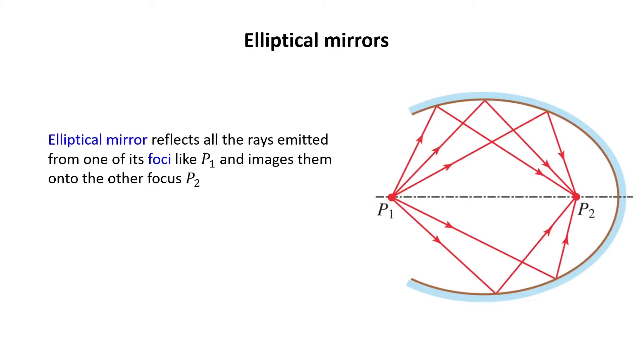If you remember, in the last videos, I said there might be more than one optical path between two points that have the least travel time. Here you see an example. As you see, all paths connecting points P1 to P2 have the same length.